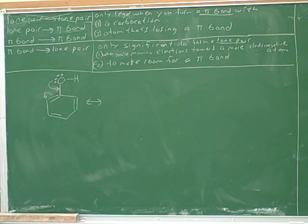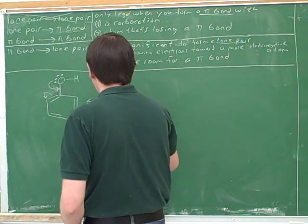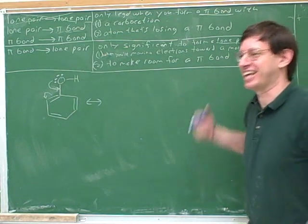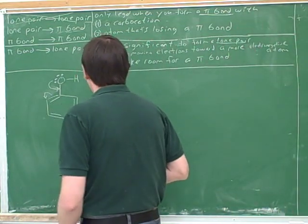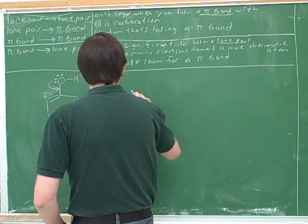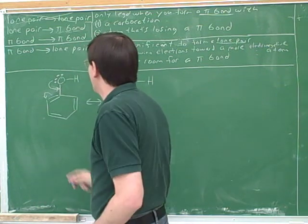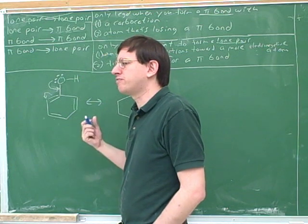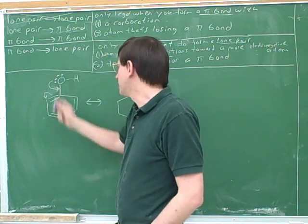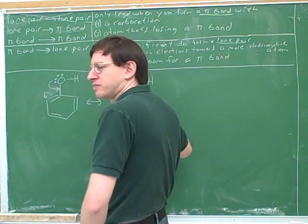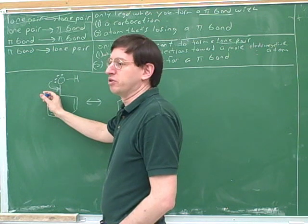The arrows tell us which bonds to form and which bonds to break. Is this telling us to form a bond or break a bond? It's telling us to form this bond. Is this telling us to form a bond or break a bond?